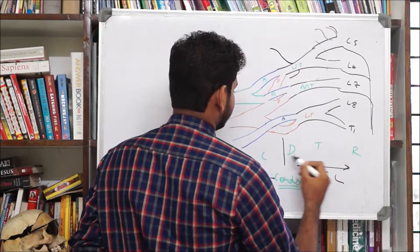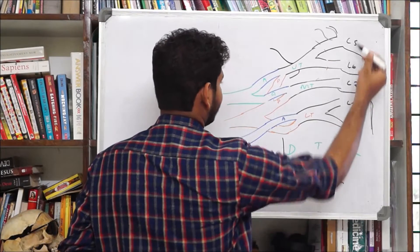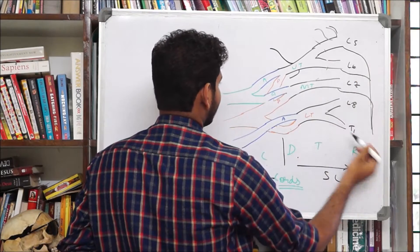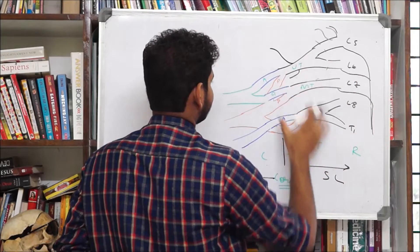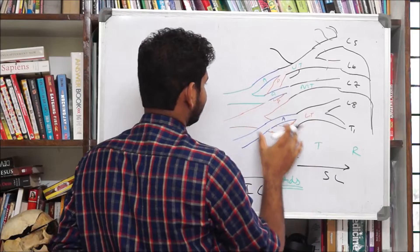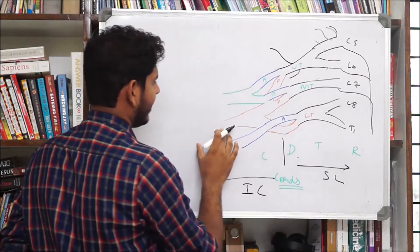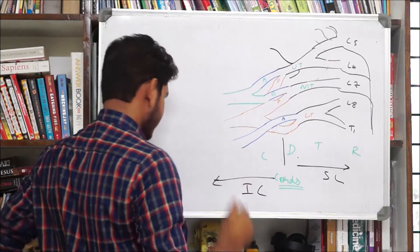Again, roots, trunks, division, cords, C5 to T1. We have trunks, we have divisions, and then finally we have the cords.